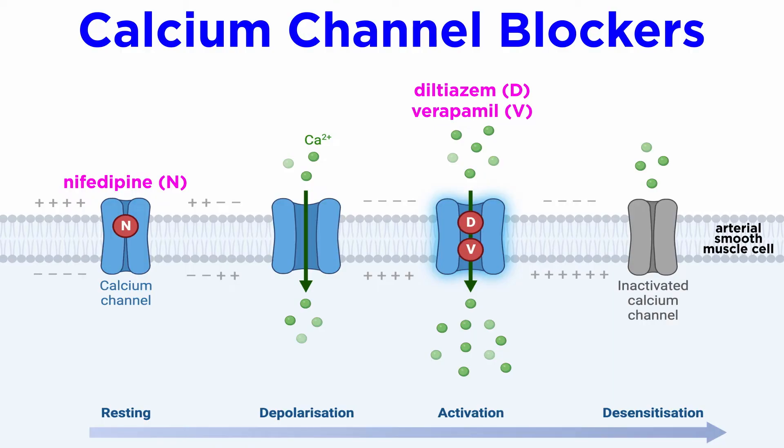Calcium channel blockers work via a similar mechanism, but they instead block calcium channels in arterial smooth muscle cells. Inhibiting the influx of calcium ions leads to vasodilation in a similar manner as was described through inhibition of the calcium-dependent enzyme myosin light chain kinase.